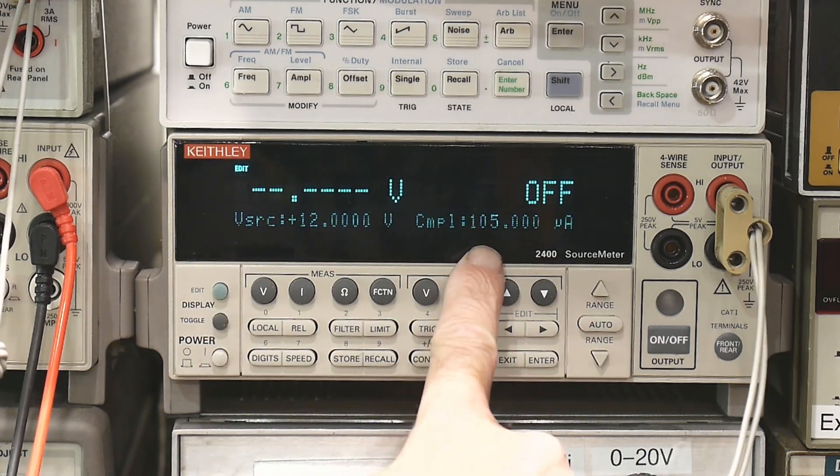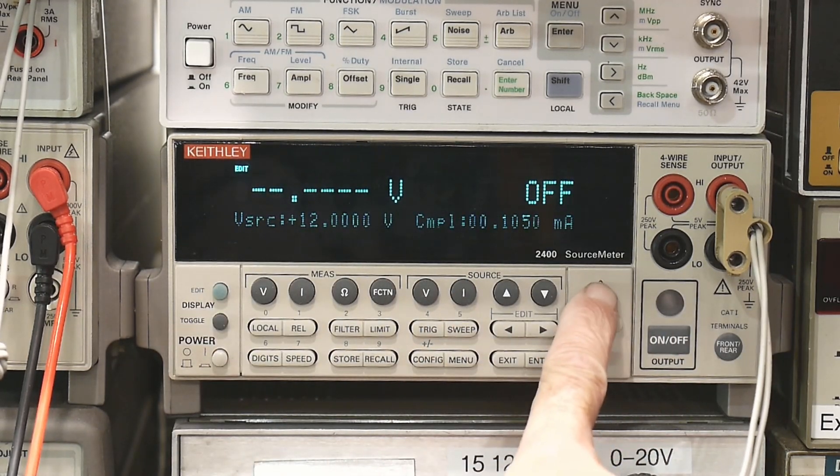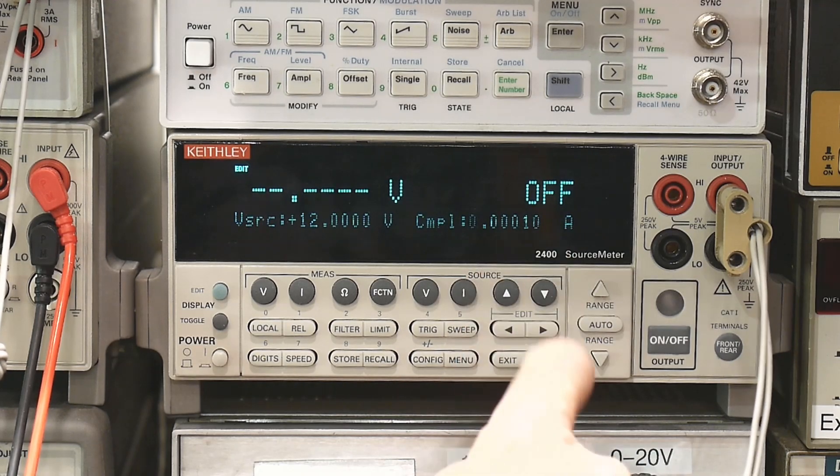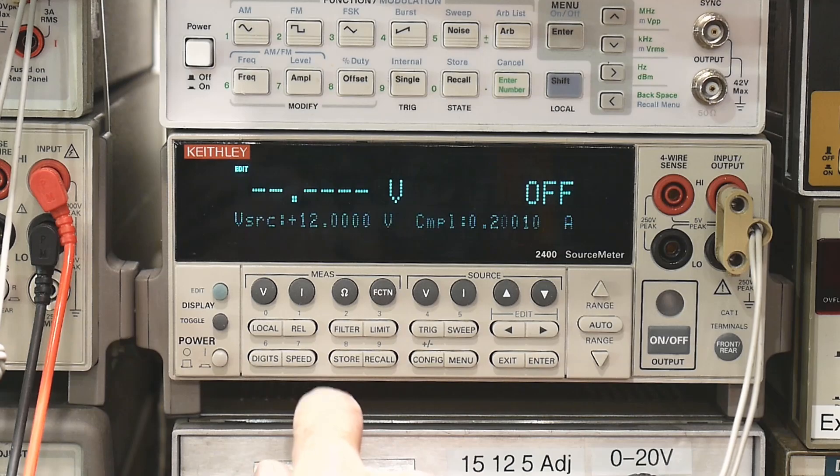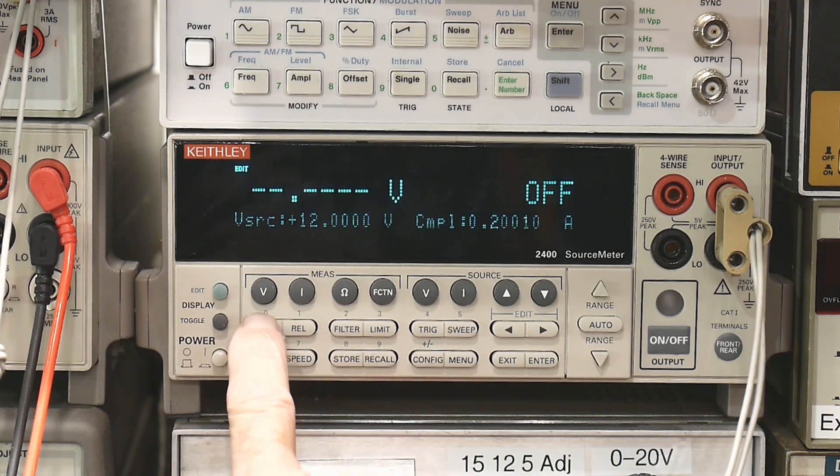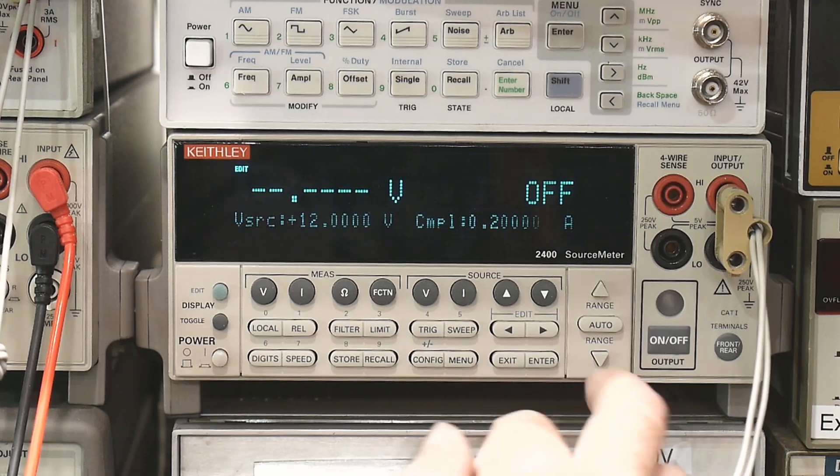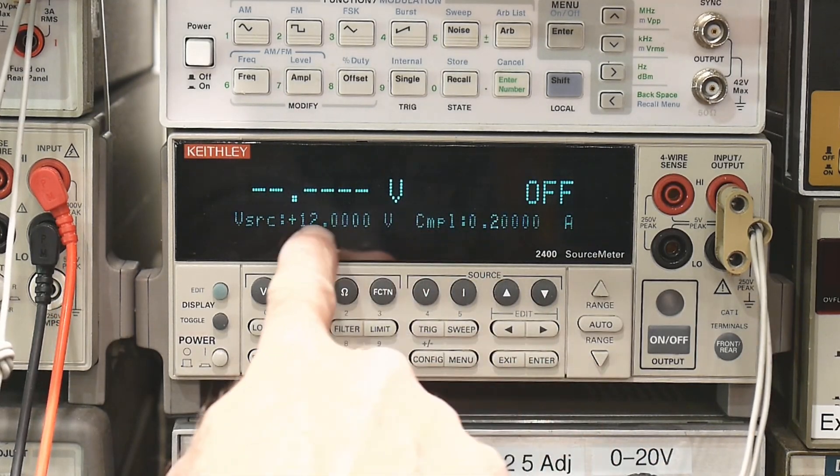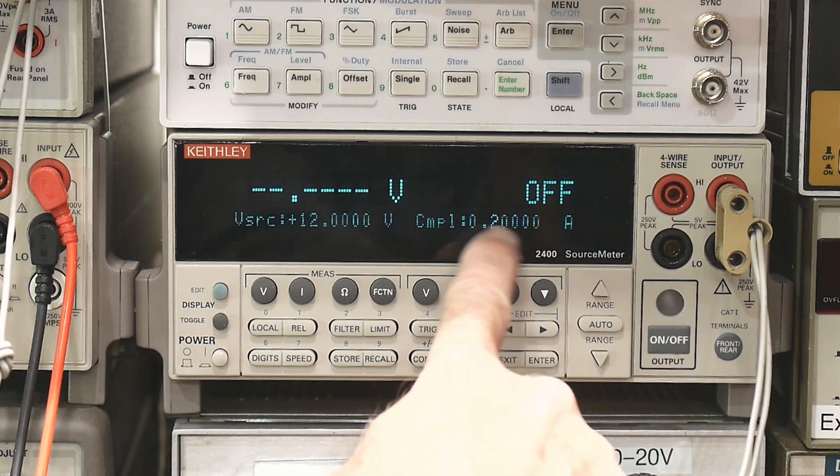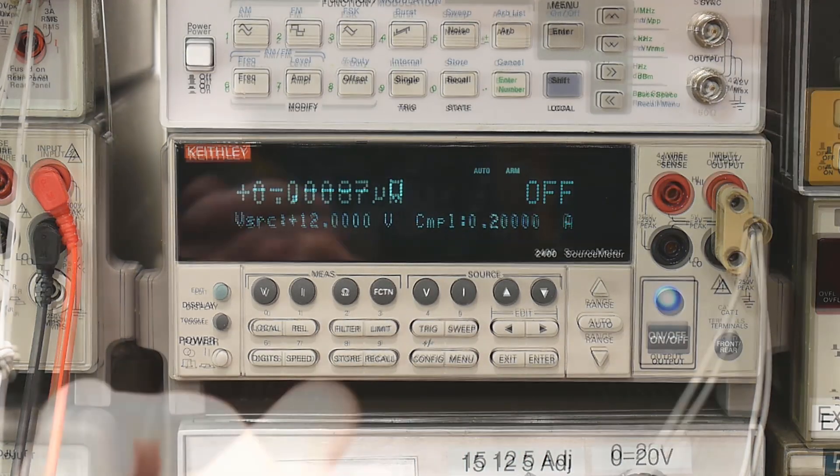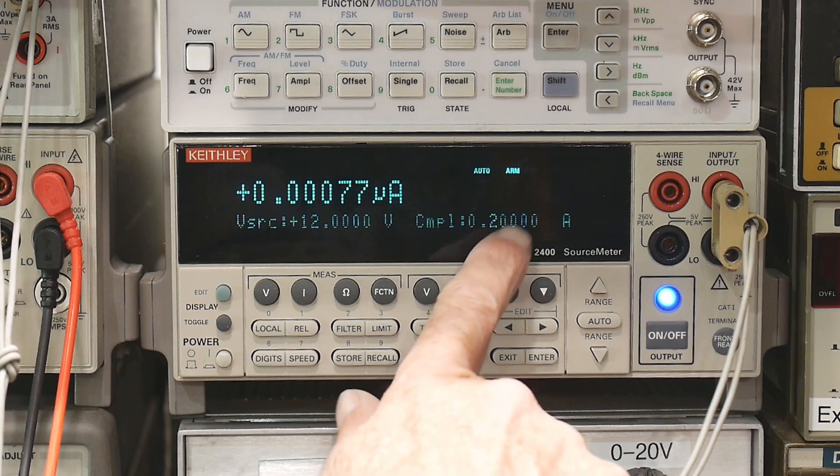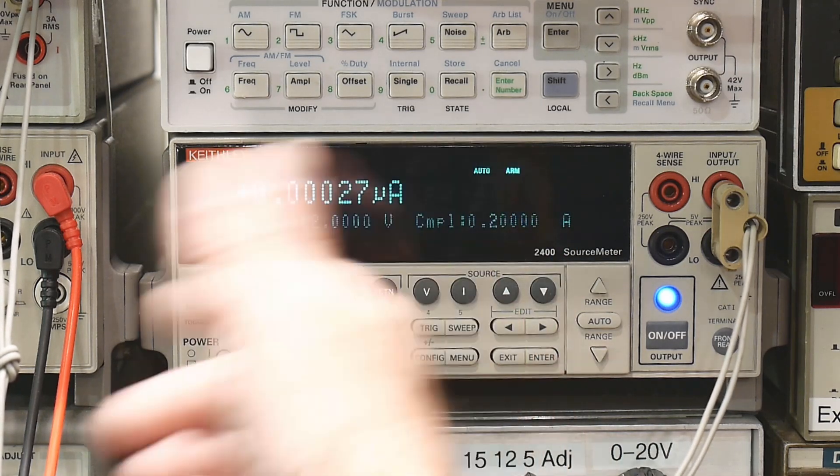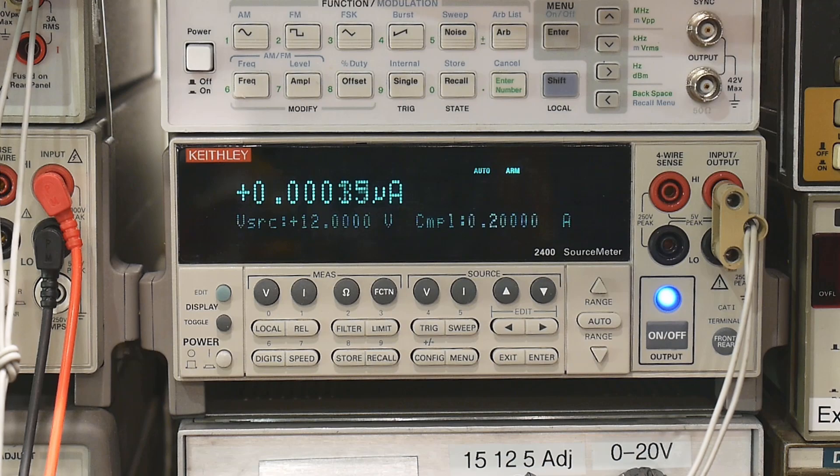Change the range. And we're going to do 0.200, 200 milliamps. Enter. So source 12 volts and we'll allow it to go up to 200 milliamps. So we've set the 12 volts and 0.2 amps and we can now hook that up.